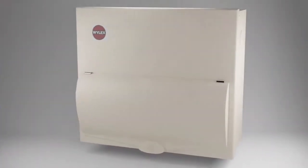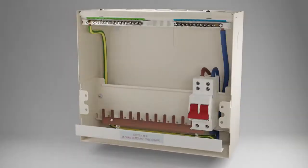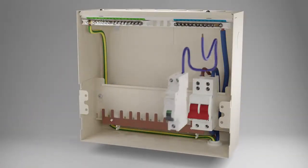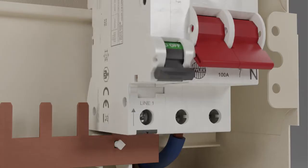Arc fault detection devices should be installed at the origin of each circuit that is being protected, i.e. installed in the consumer unit or distribution board.